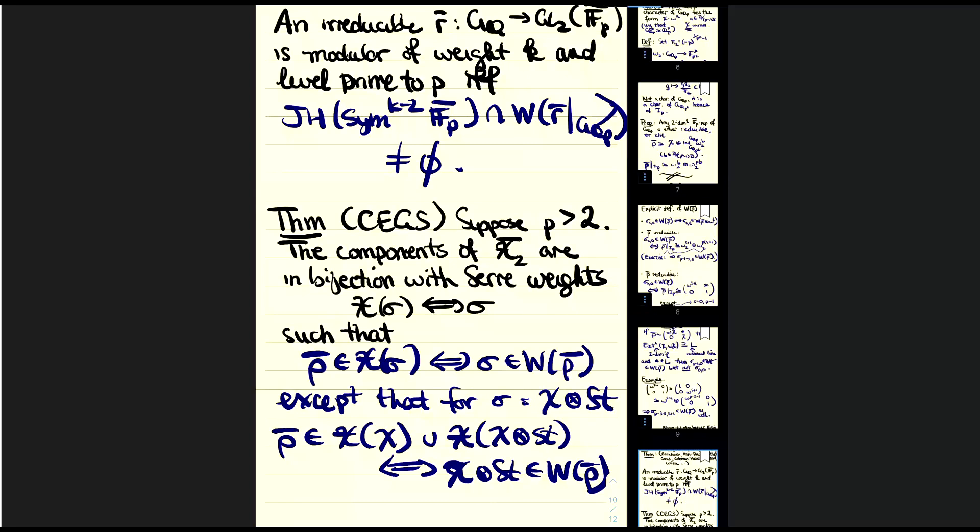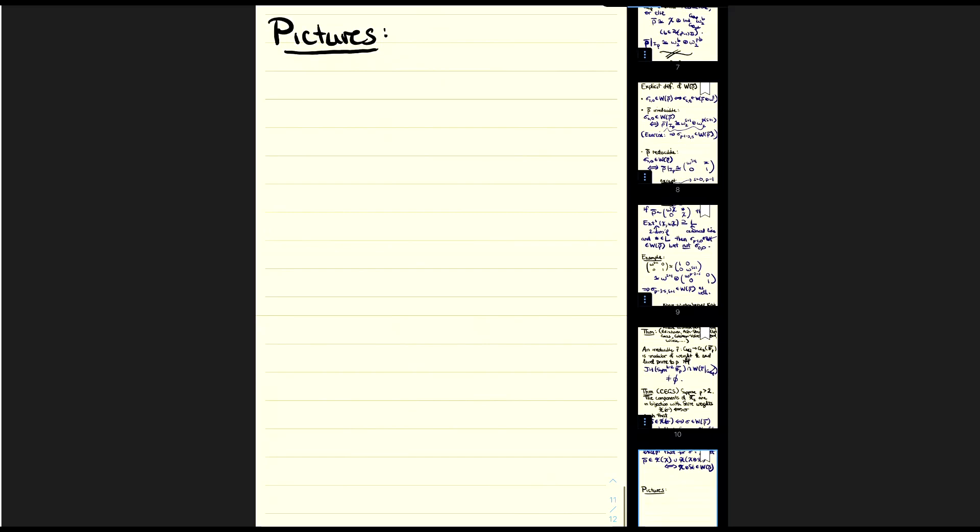Let me draw some pictures. I should mention that given the relationship between the set W(ρ̄) and the modularity theorem, this explicit description of W(ρ̄) when K = Q_p is very closely related to Serre's original recipe for a predicted minimal weight for which a given representation is modular. So the pictures I'm about to draw are a kind of geometrization of Serre's recipe.